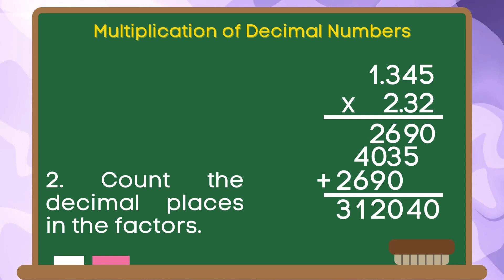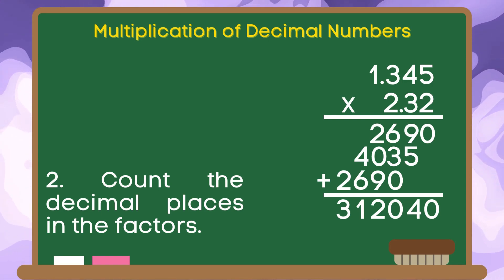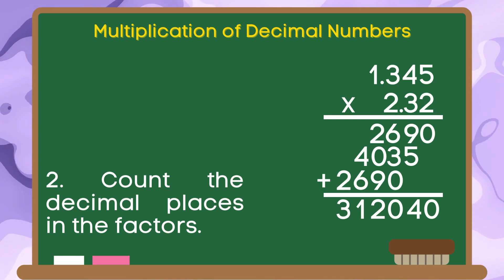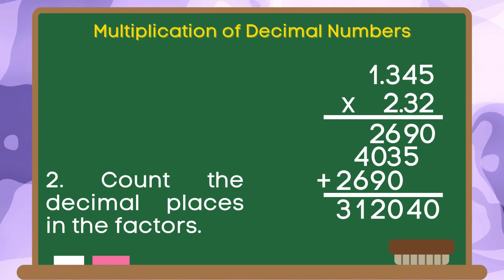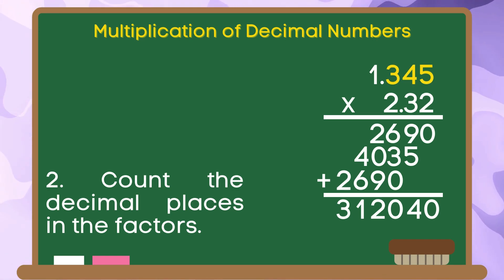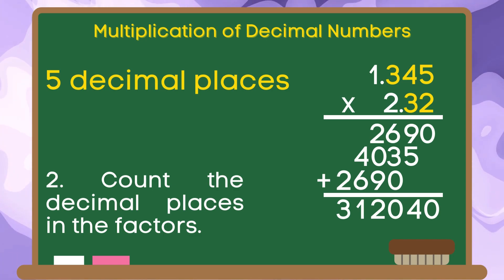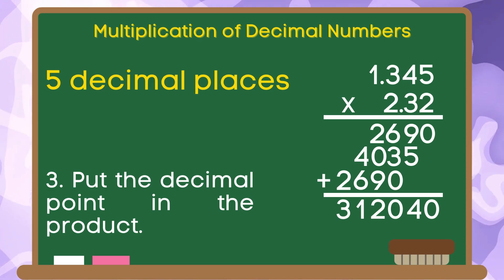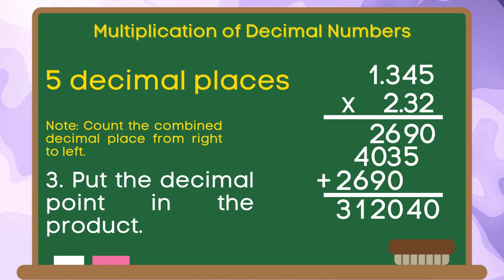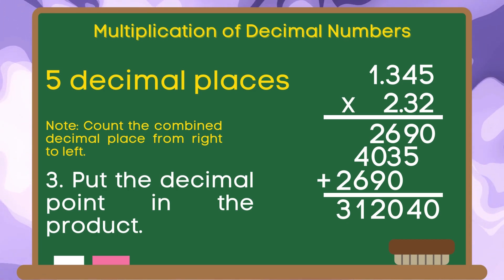Step 2, let us count the decimal places in the factors. Both multiplicand and multiplier have decimal places. We are going to combine the number of decimal places in both factors. 1, 2, 3, 4, 5. In this example, we have 5 decimal places. For step 3, let us put the decimal point in the product. Since our given has 5 decimal places, we are going to move 5 places from right to left.